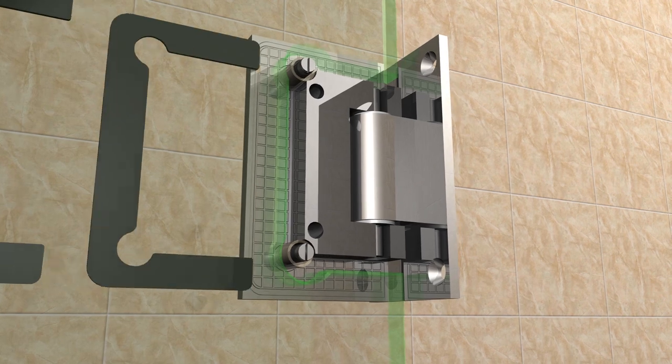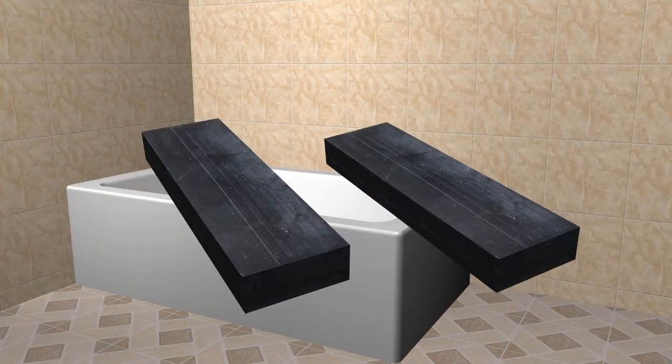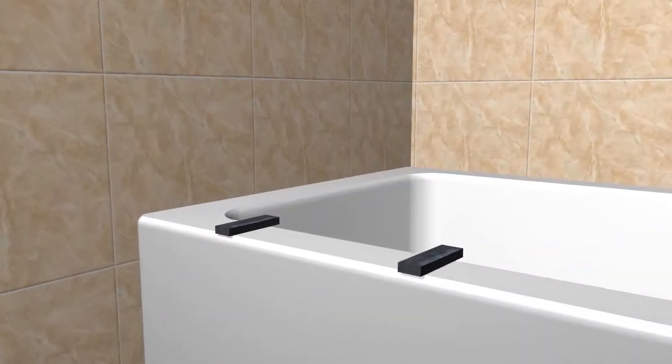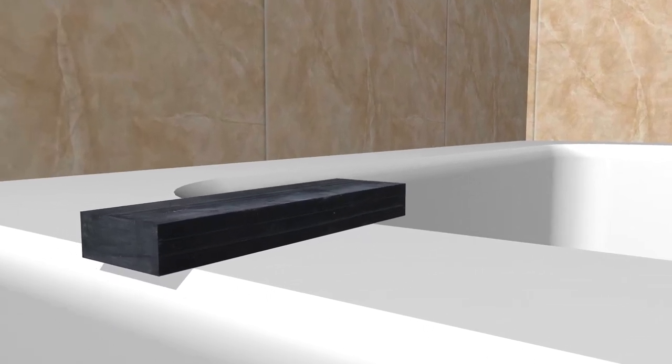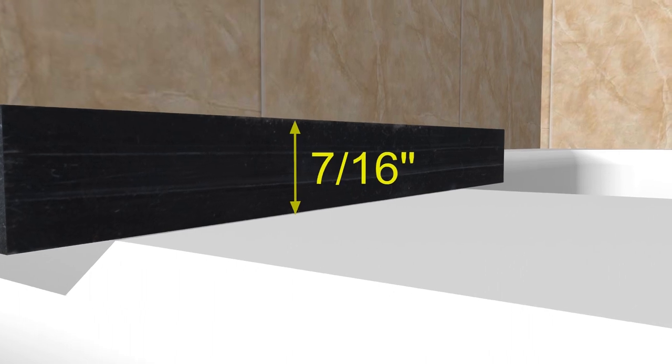The reason hinges have to be installed at this time is to mark up the proper holes in the wall for drilling. Place plastic shims onto the tub where the glass screen will be installed. This will create 7/16ths of an inch gap between glass and tub surface. The gap is a placeholder for the drip edge plastic sweep at the end of the installation.